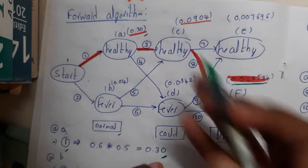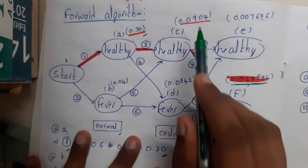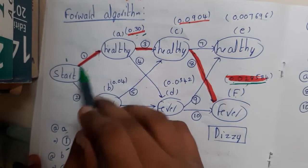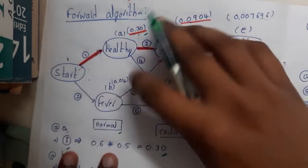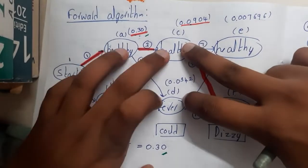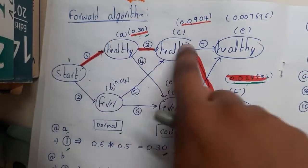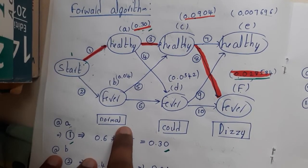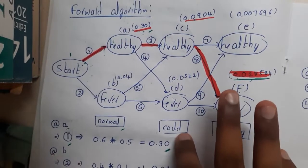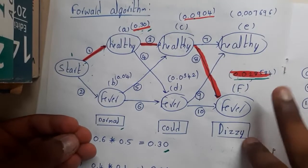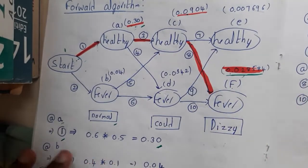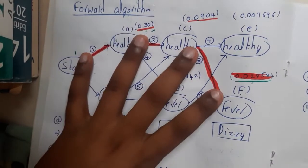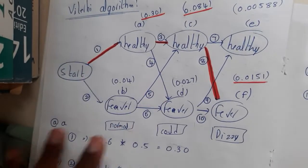Once the maximums are underlined, backtrack. Highlight the path: from the final node, trace back which maximum led there. By following the maximum path, we find: if the output is Normal you are Healthy, if Cold you are Healthy, and if Dizzy you have Fever. This is the hidden pattern identified from the outputs using the Forward method.